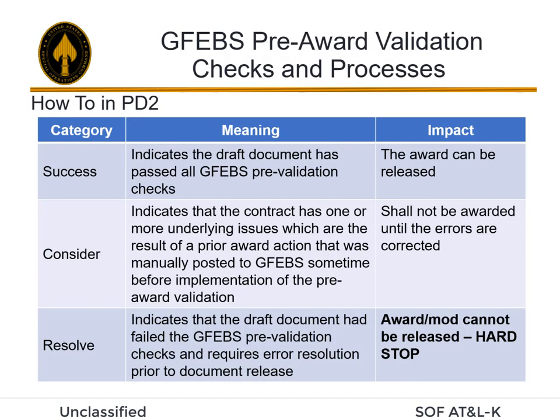There are three result categories. We will look at each one individually. This chart provides you with a comprehensive look at each category, what it means to you, and what impact it will have on your ability to release your award.